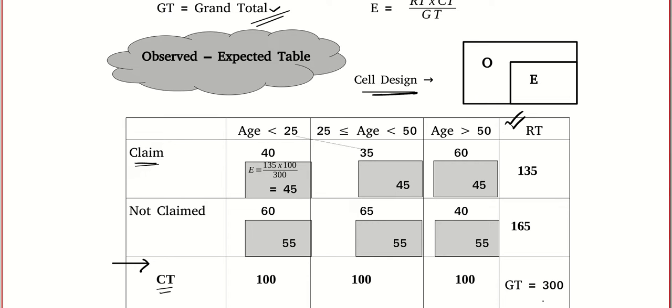What is the formula for the expected value? Row total multiplied by the column total, the whole divided by grand total. I have shown one example here and you can copy paste the same thing. We get the same thing.